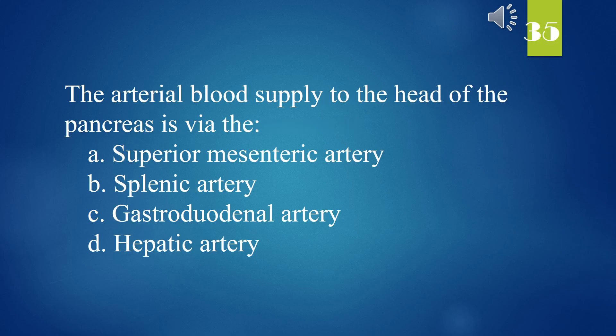The arterial blood supply to the head of the pancreas is via the: A. Superior mesenteric artery. B. Splenic artery. C. Gastroduodenal artery. D. Hepatic artery. The answer is C. Gastroduodenal artery.